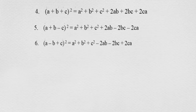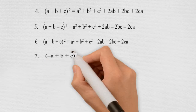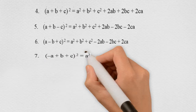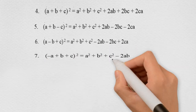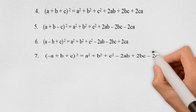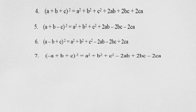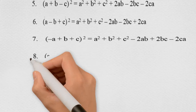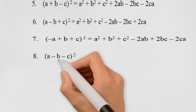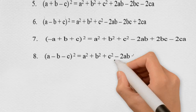The seventh identity is (a − b + c) whole square, which is equal to a square plus b square plus c square minus 2ab plus 2bc minus 2ca.